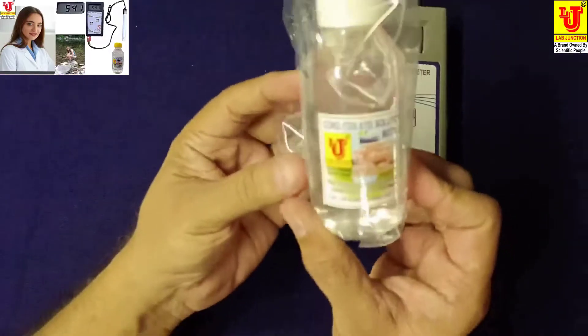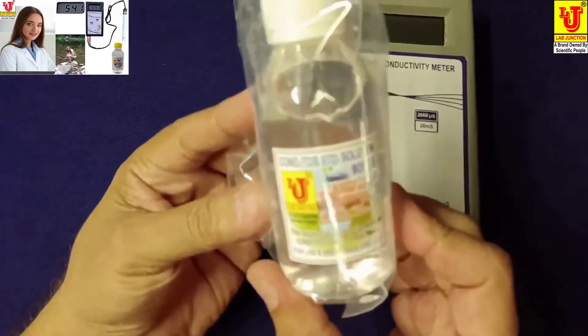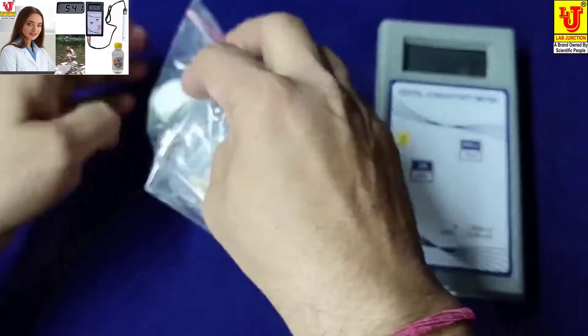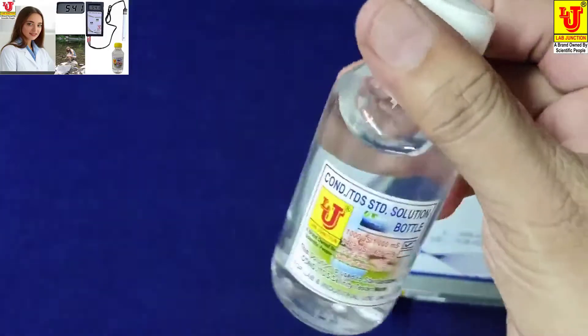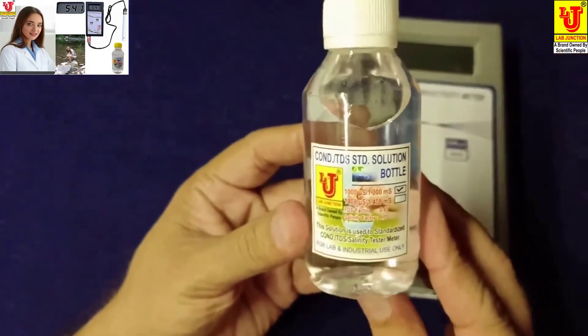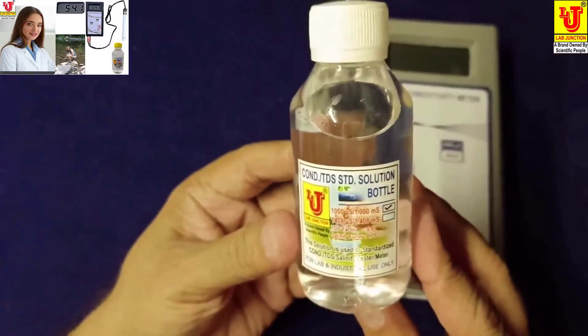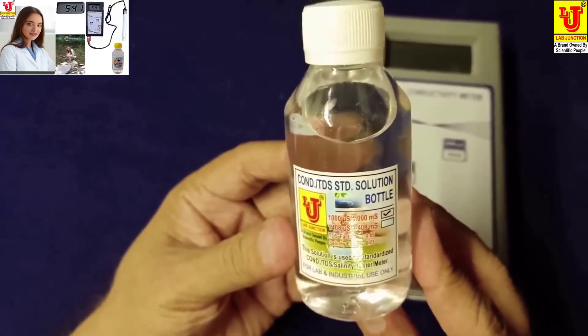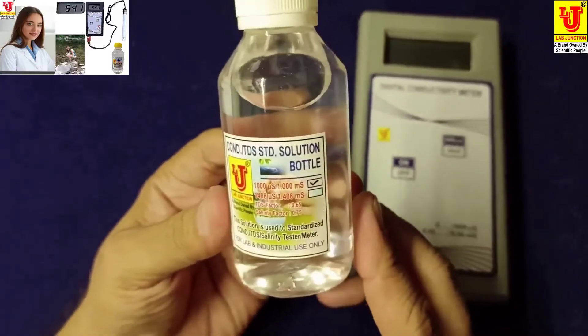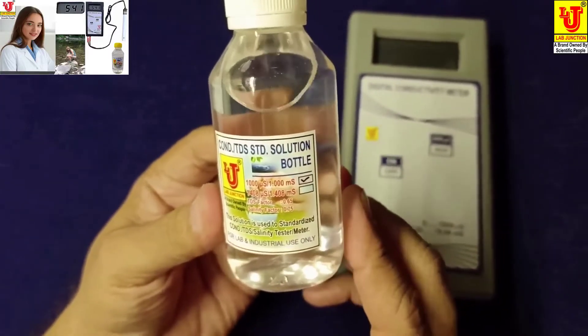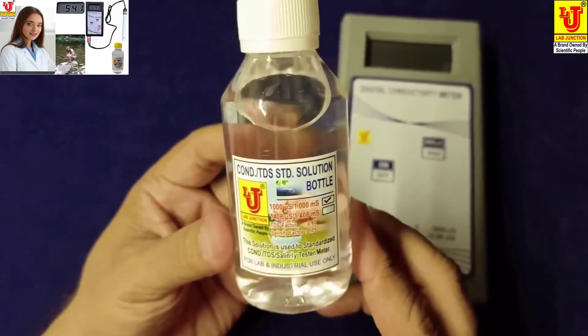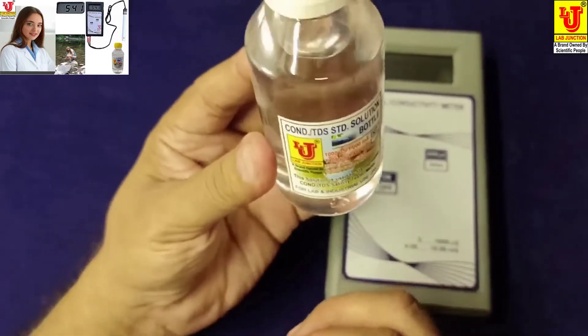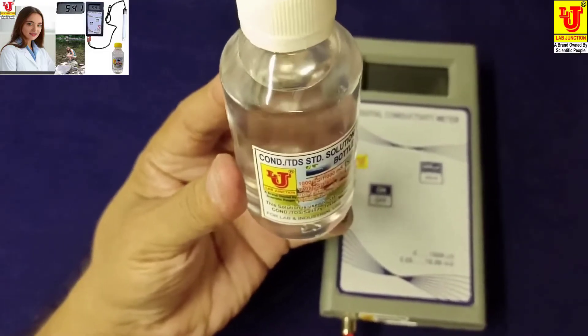One is conductivity TDS standard solution. Unpacking this. Value 1 millisiemens or 1000 microsiemens for calibration of portable digital conductivity meter. In this, net content 100 ml.